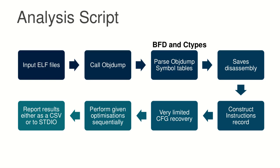The optimization will find the instructions we want to optimize in the instruction record, check that they match our criteria, and replace them in the instruction record. After that, when exiting, if a CSV file is specified on the command line, it exports all results to CSV; otherwise it outputs to the command line. It might have been better to use binary file descriptor and ctypes from Python to parse the symbol table instead of calling objdump, but it started as something very small and just expanded.